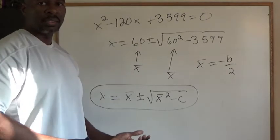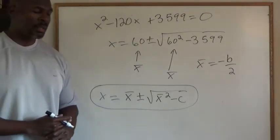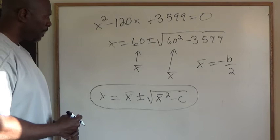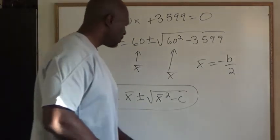There it is. So X is X bar plus or minus the square root of X bar squared minus C. But let's dig deeper into this particular formula.